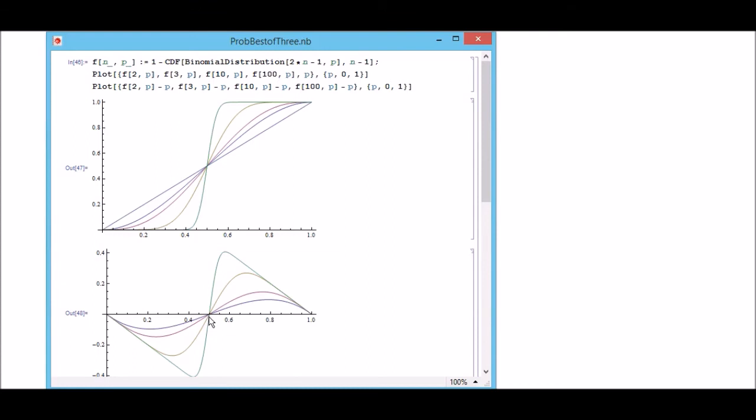And you can imagine how this curve would go if we go to infinity. It would look like that: you just have 0% chance if we have less than 0.5.